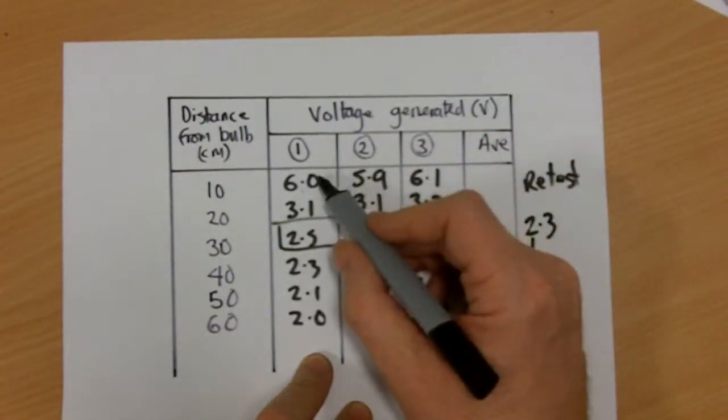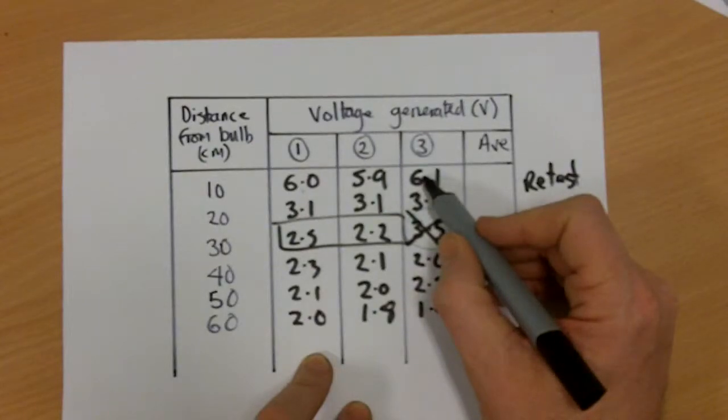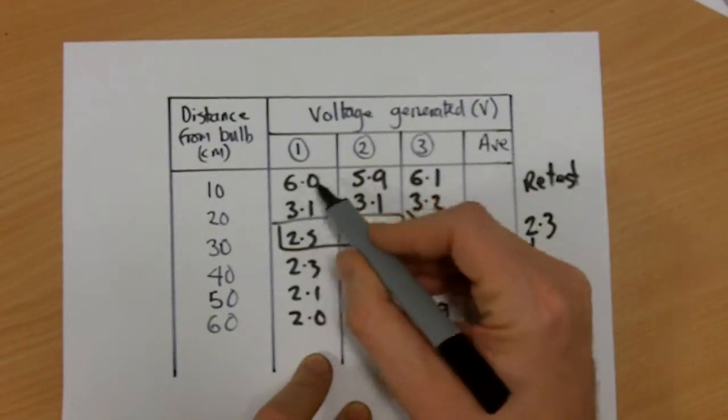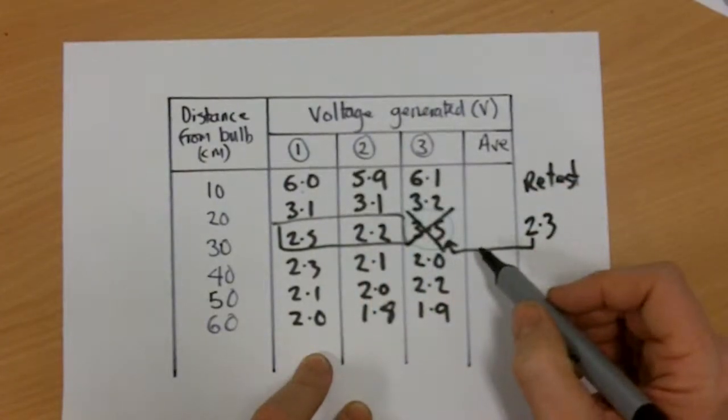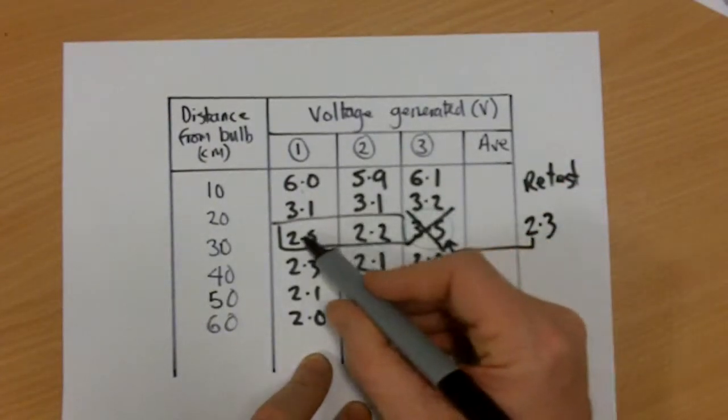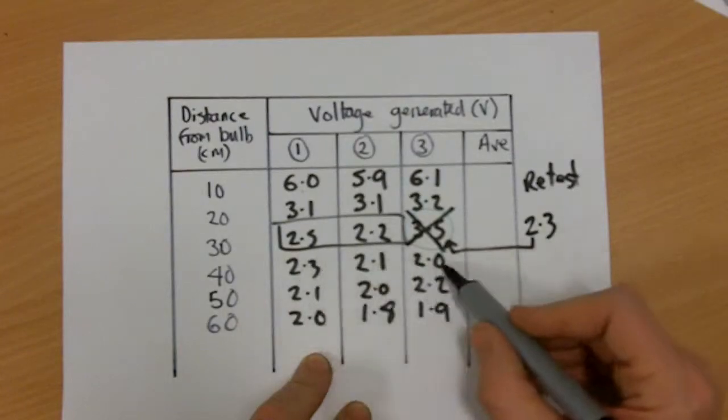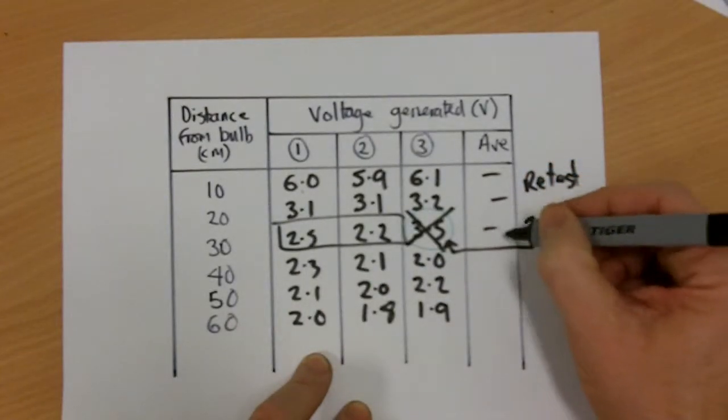So, you take your averages by adding them up and dividing by how many results you've got. So, in this case, 6 plus 5.9 plus 6.1 all divided by 3 because there's 3 results. 3 results. Here I just divide by 2 and that will give me my averages. I'm not going to bore you with the calculations.